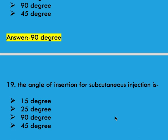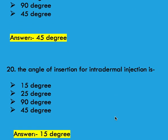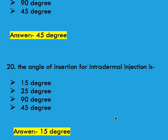The angle of insertion for subcutaneous injection is options 15 degree, 25 degree, 90 degree, and 45 degree. Right answer is 45 degree. The angle of insertion for intradermal injection is options 15 degree, 25 degree, 90 degree, and 45 degree. Right answer is 15 degree.